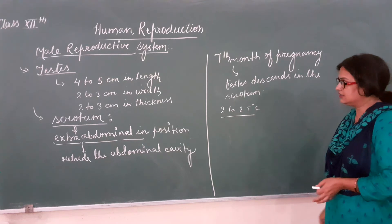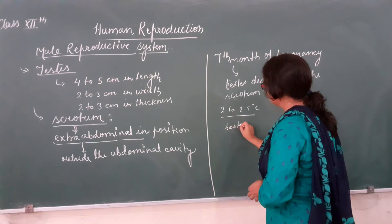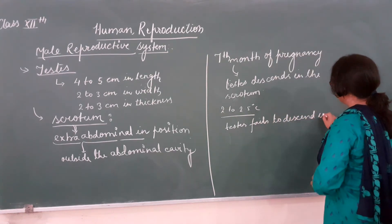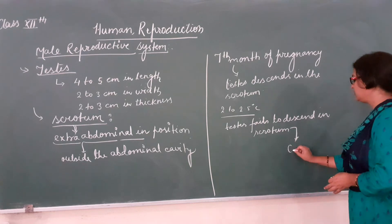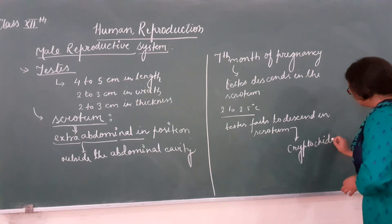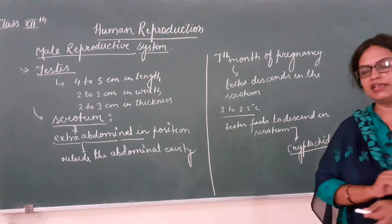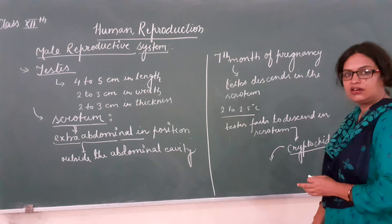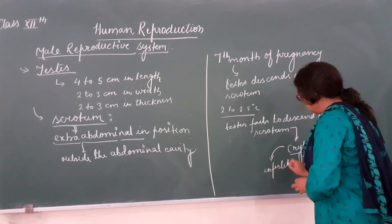If the testis fails to descend into the scrotum, a disorder occurs. That disorder is called cryptorchidism. In cryptorchidism, the testis does not descend into the scrotum, due to which spermatogenesis does not occur, and as a result the male becomes infertile.